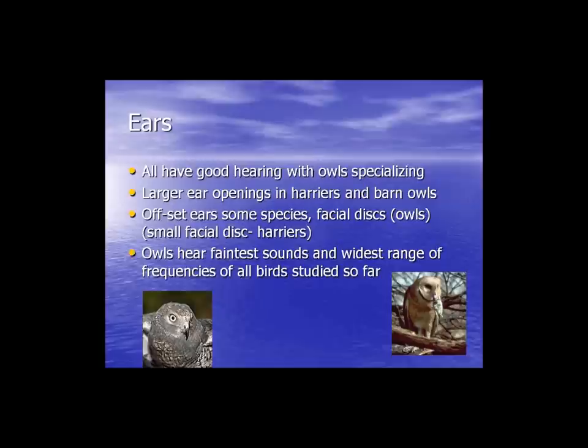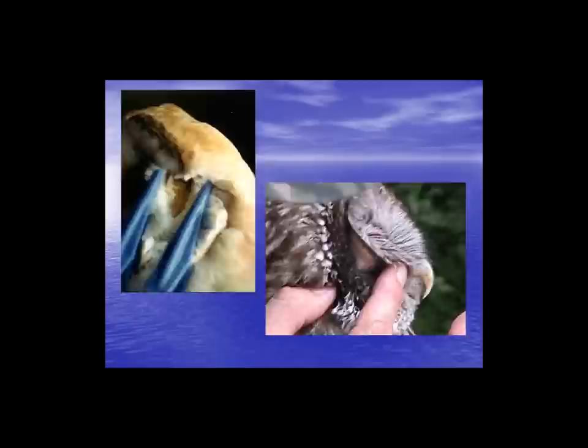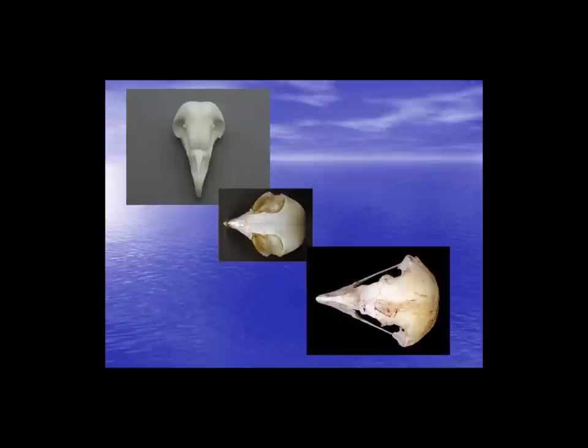Raptors also have excellent ears, especially owls and harriers. Some species have offset or asymmetrical ear openings. Looking at raptor skulls, the ear openings may appear symmetrical but the bone conformation is quite different from left to right. Screech owls are probably the most extreme — their left and right ears are actually at totally different planes along their skull. Owls can hear the faintest sounds and have been found to hear the widest range of frequencies of all bird species studied.